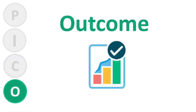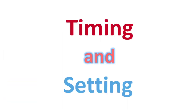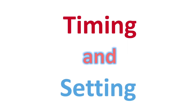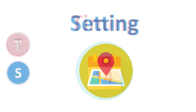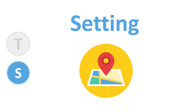O stands for outcome. Outcome represents what results you plan on measuring to examine the effectiveness of your intervention. Some examples of outcomes might be morbidity, death, complications from the treatment, etc. T stands for time or timing — this can be the time it takes to demonstrate an outcome of interest. Lastly, S stands for setting — what is the setting in which your research question will take place?